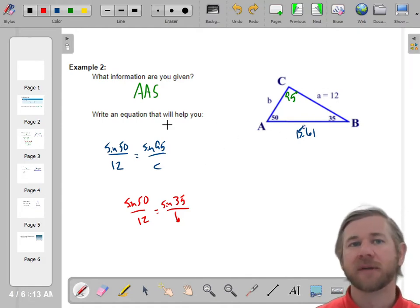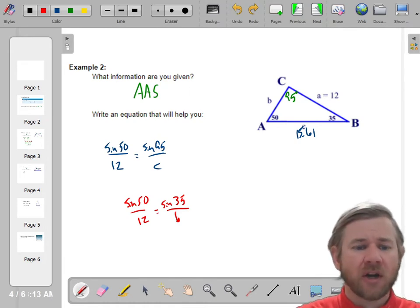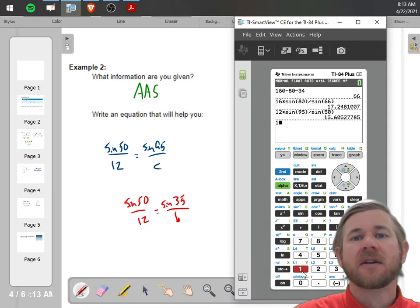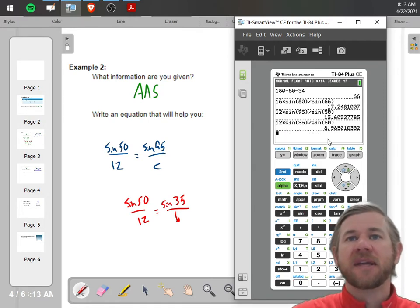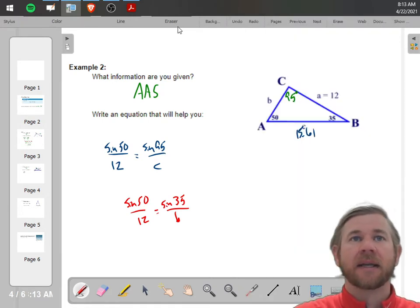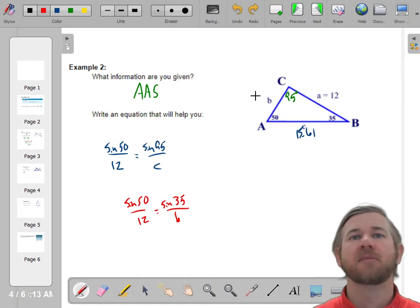And then like, eh, that maybe, hopefully that's right, but it's not, I'm not going to miss both of them. So let's see, I got cross multiply here. 12 times the sine of 35 divided by the sine of 50. And little B is 8.99. B is 8.99.